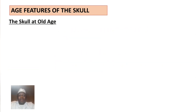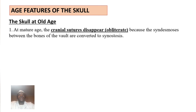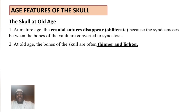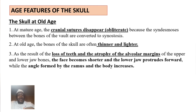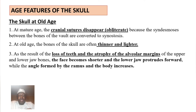The skull at old age has three main features. First, the cranial sutures disappear — they obliterate because the syndesmosis between the bones of the vault are converted into synostosis. Second, the bones of the skull often become thinner and lighter. Third, due to loss of teeth and atrophy of the alveolar margins of both upper and lower jaws, the face becomes shorter, the lower jaw protrudes forward, and the angle formed by the ramus and the body of the mandible — angulus mandibuli — increases.